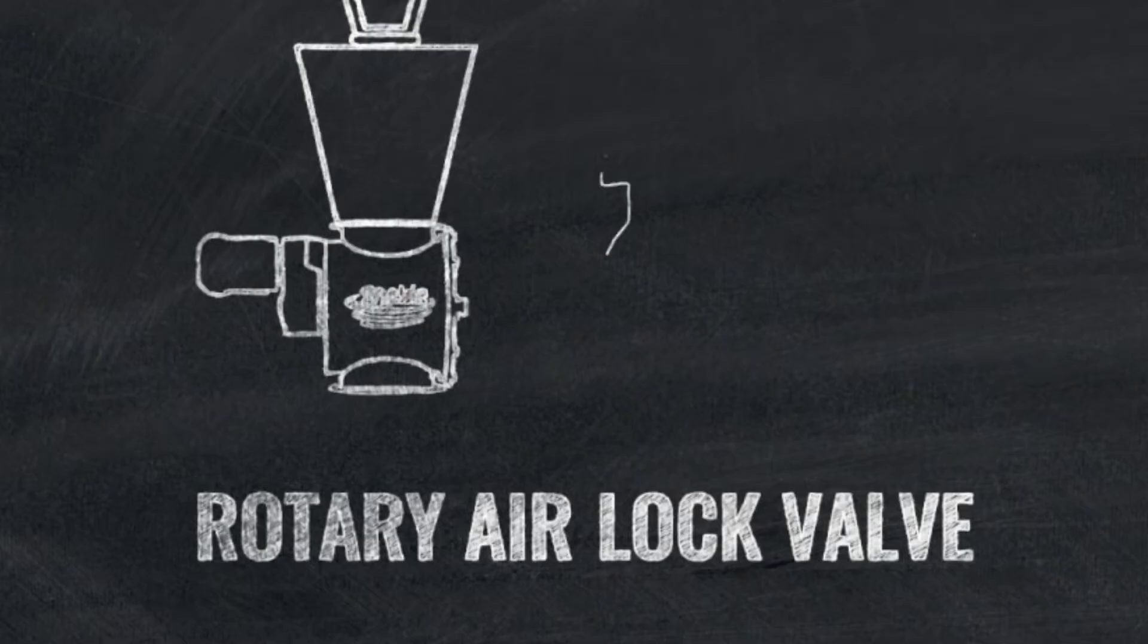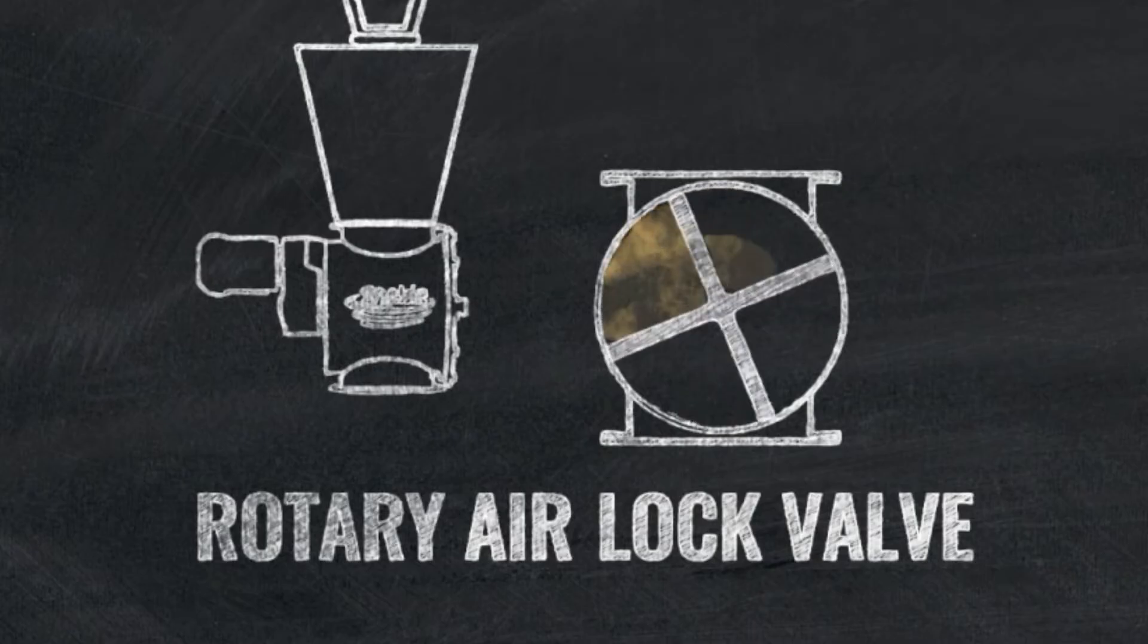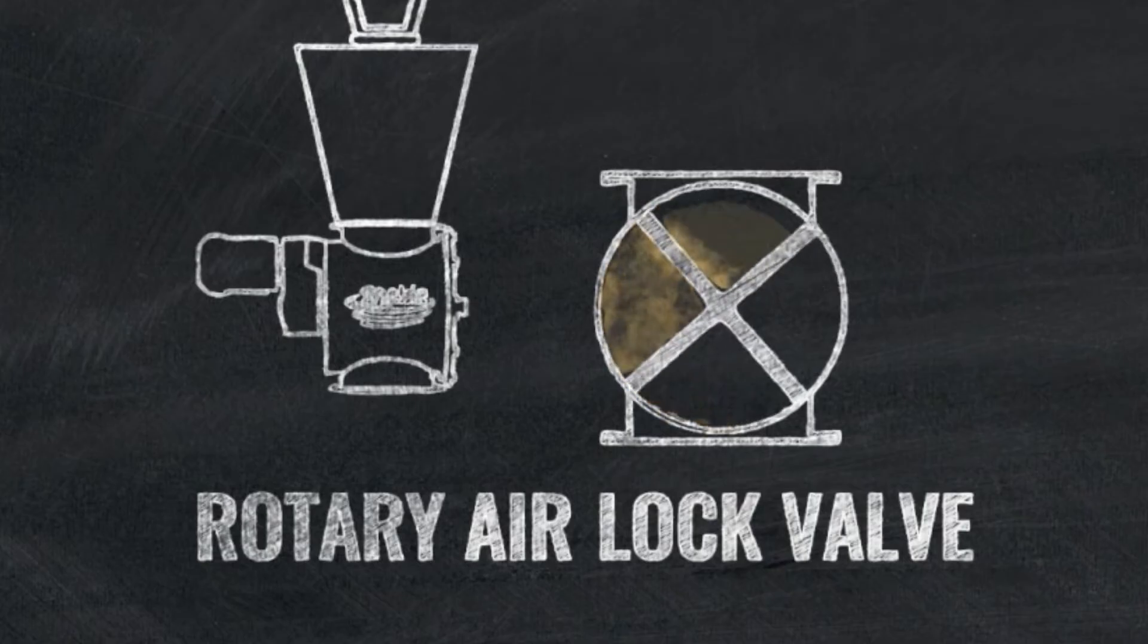A rotary airlock valve is a motorized air valve that maintains an airtight seal with your cyclonic dust collector while automatically feeding dust and debris into coppers or transfer blowers for highly efficient handling of bulk waste without the need of a sealed container.